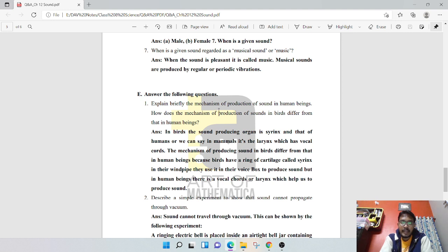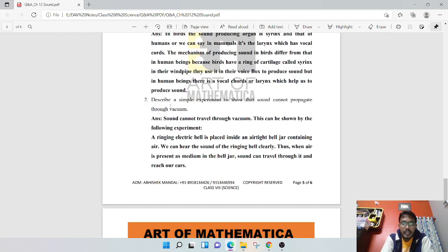Answer the following question: Explain briefly the mechanism of production of sound in human beings and how does the mechanism of production of sound in birds differ from that in humans. In birds, the sound propagating organ is syrinx, and in humans or mammals it is the larynx which has vocal cords. Birds have a ring of cartilage called syrinx in their windpipe which they use in their voice box to produce sound, but in human beings there are vocal cords or larynx which help us produce sound.